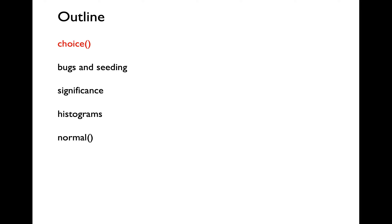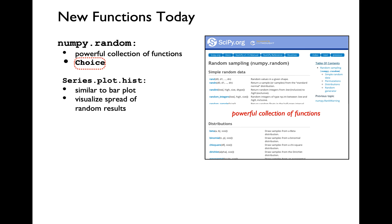We are going to focus on simulation for our discussion on randomization. The first function I'm going to talk about is the choice function in the NumPy random module — numpy.random. We have already gone through the choice and choices functions in the regular random module, but those are kind of limited. NumPy comes installed with the Pandas module as a requirement, so all of you should already have NumPy installed. For the purpose of the final exam, you only need to know about the choice function in the NumPy random module.